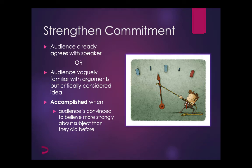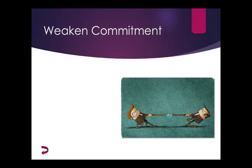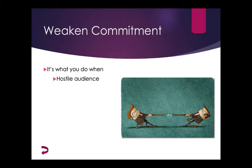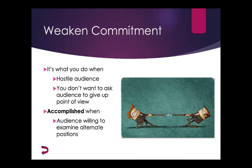The speaker isn't necessarily trying to move them all the way to the right — the goal is to move them some. You know you've accomplished it when the audience is convinced to believe more strongly about the subject than they did when you began. The next goal is to weaken someone's commitment. If you're using this approach, you're trying to move the audience further left on our imaginary scale, or maybe just from the right to the middle. This strategy is most often used when facing a hostile audience. If your audience is angry, you probably don't want to ask the audience to give up a point of view, because then you would risk losing them completely or pushing them further into their existing schema. You know you've accomplished it when the audience is willing to examine alternative points of view.